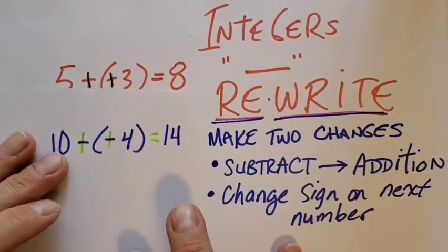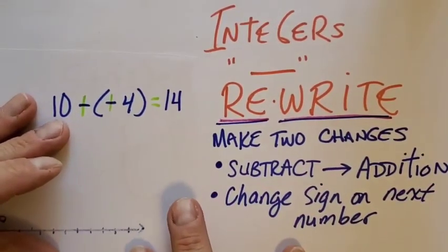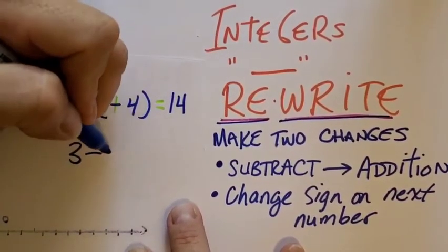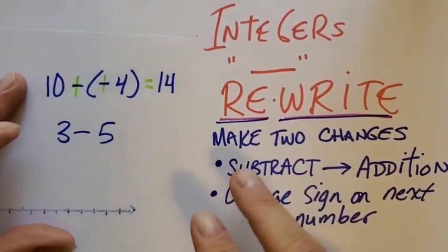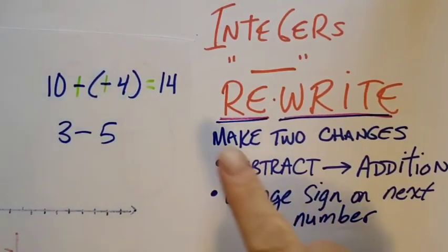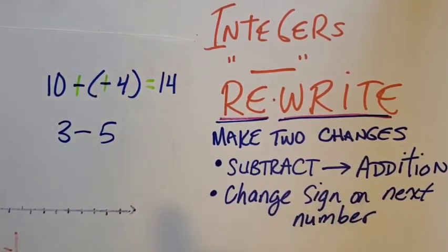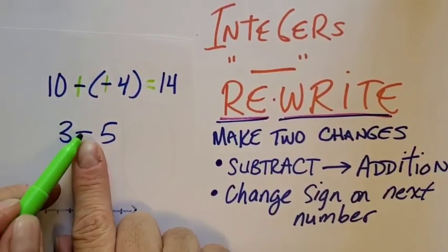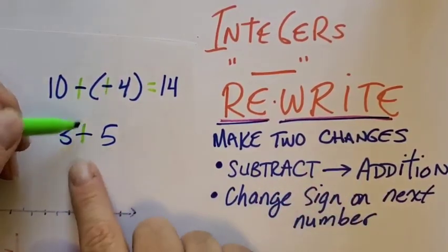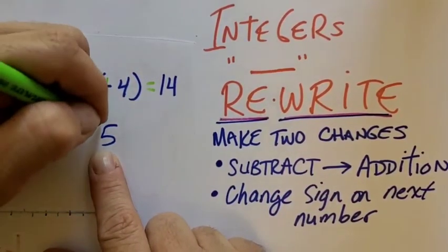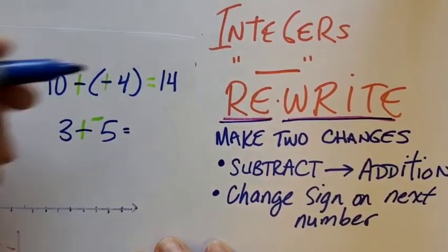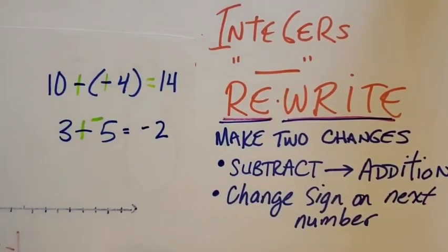Let's try another one: 3 minus 5. Think about it — you have 3 yellows, take away 5 yellows, you can't do it. So we're going to make it a rewrite, two changes. We go straight to the subtraction sign and change it to addition. Then we change the 5 to a negative 5. Rewrite. What's the answer? Negative 2.